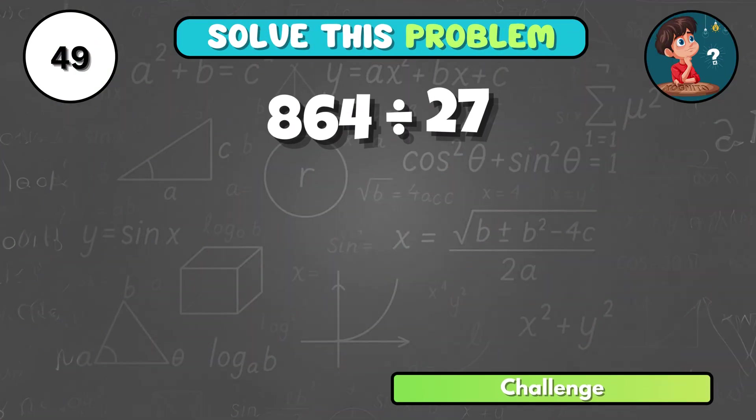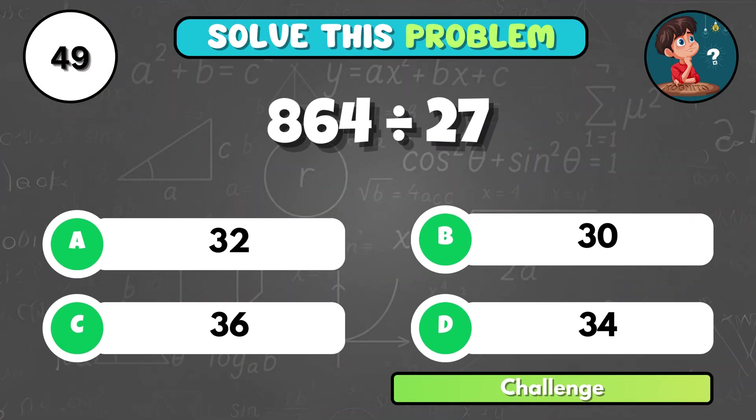What is 864 divided by 27? It equals A, 32.